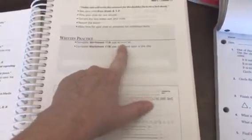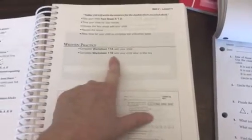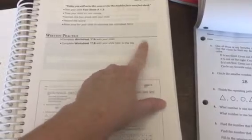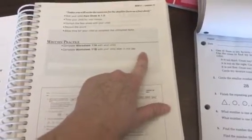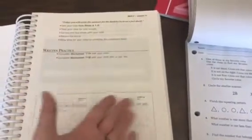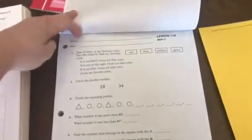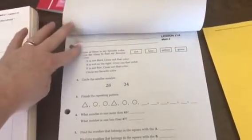Then we get to the written practice. Complete worksheet 11a with your child and complete worksheet 11b with your child later in the day. I find that a bit redundant unless your child is struggling with that concept and needs a little more practice. If this was a school setting, you would send this home for them to do 11b as homework.